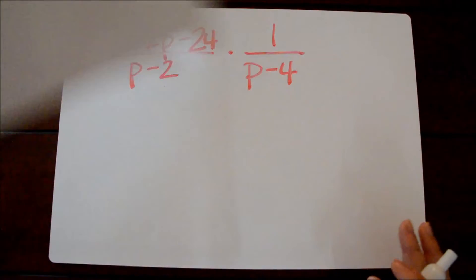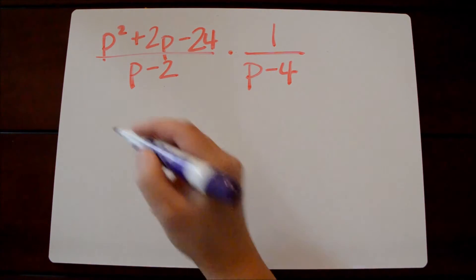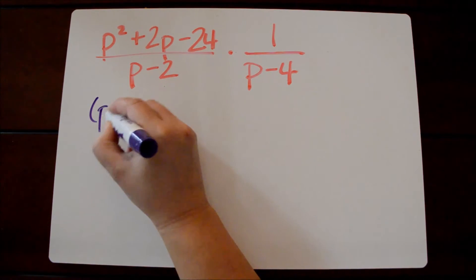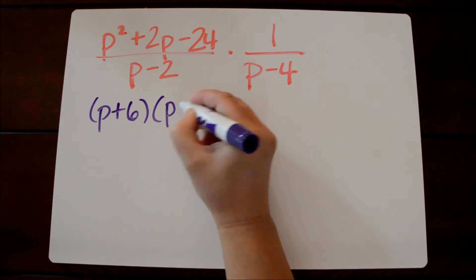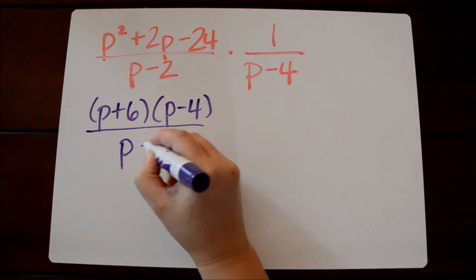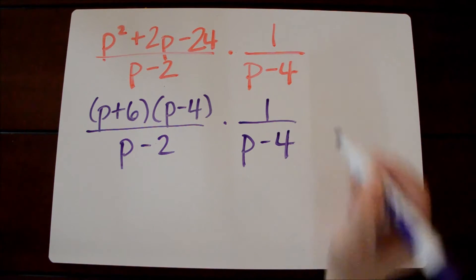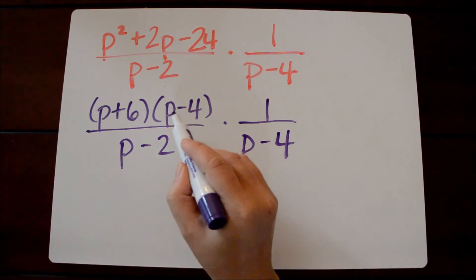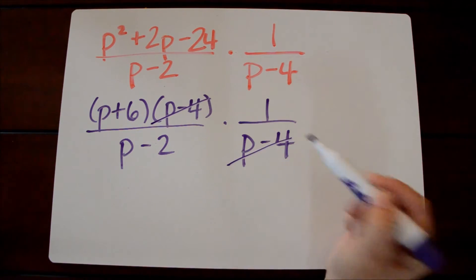Let's take a look at one more example. Here when we factor the numerator of our first expression we'll get p plus 6 times p minus 4. And then we have p minus 2 in the denominator. We can't factor out anything over on this side. So we'll just 1 out whatever we can. We could 1 out the p minus 4 over p minus 4.